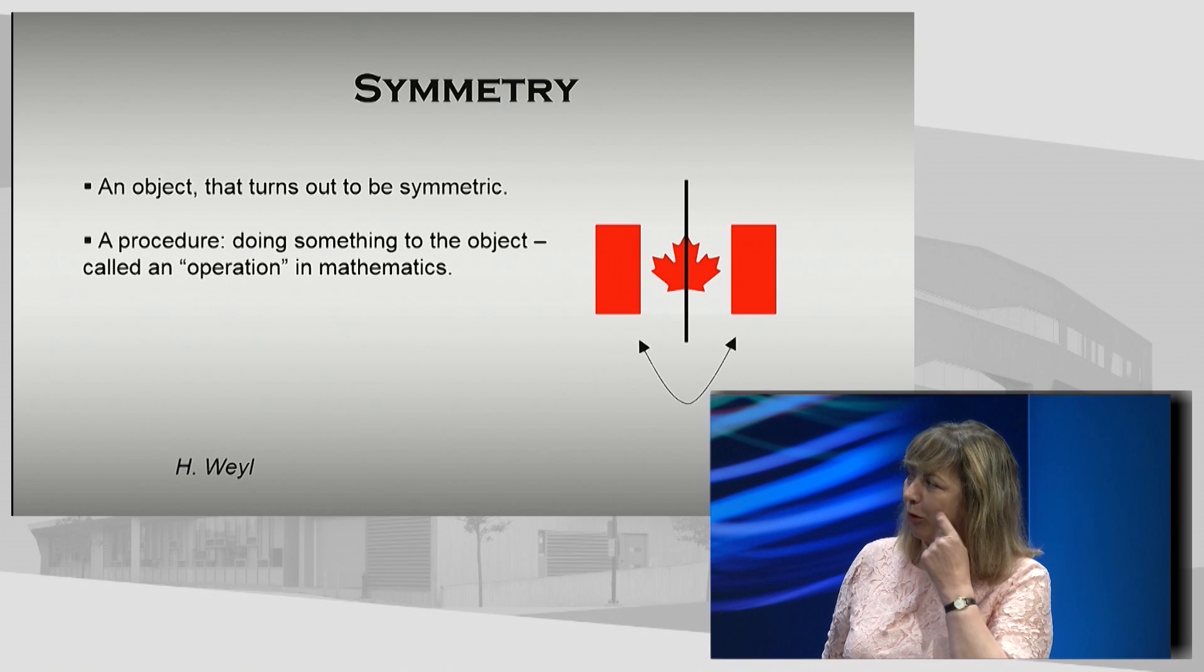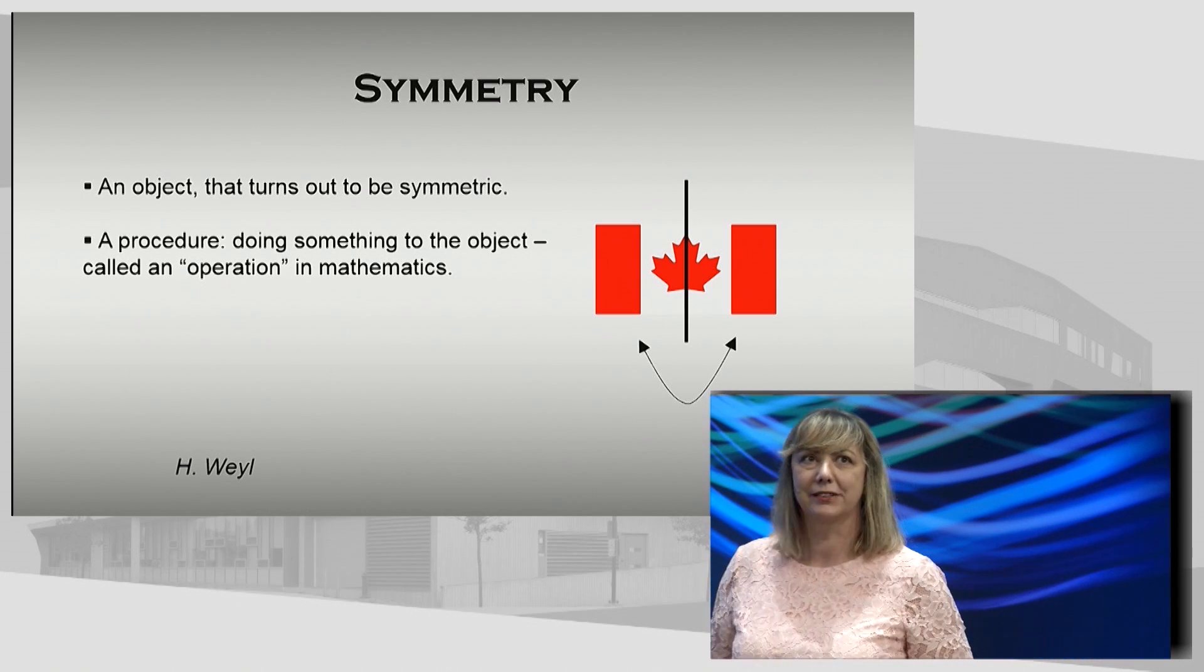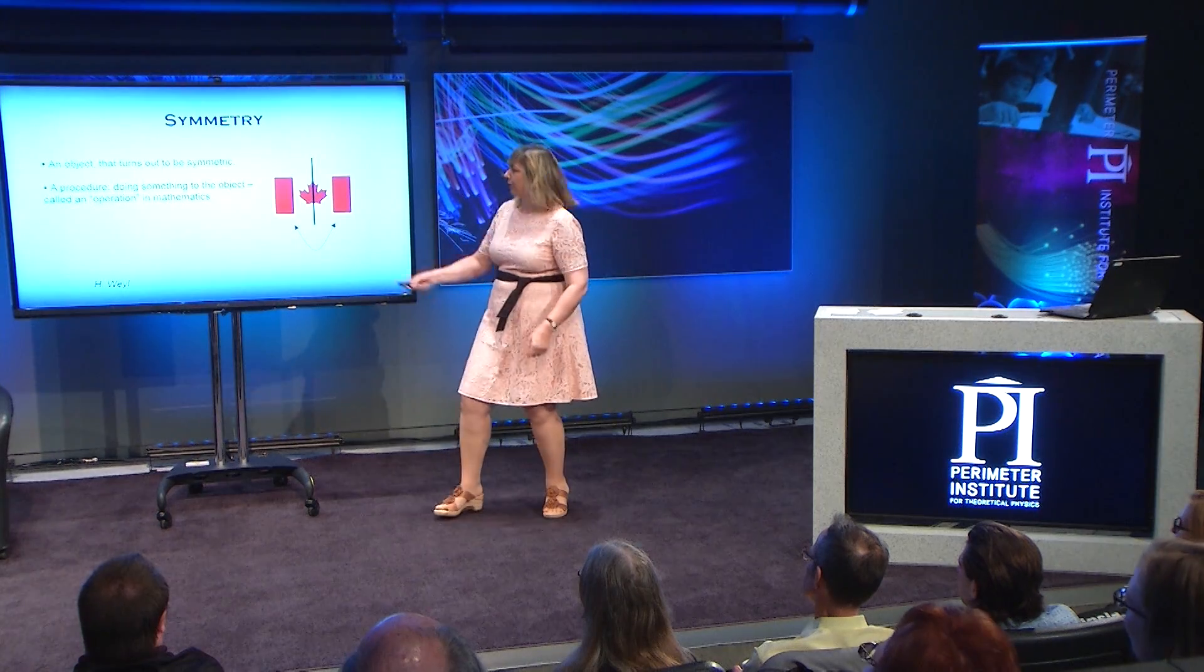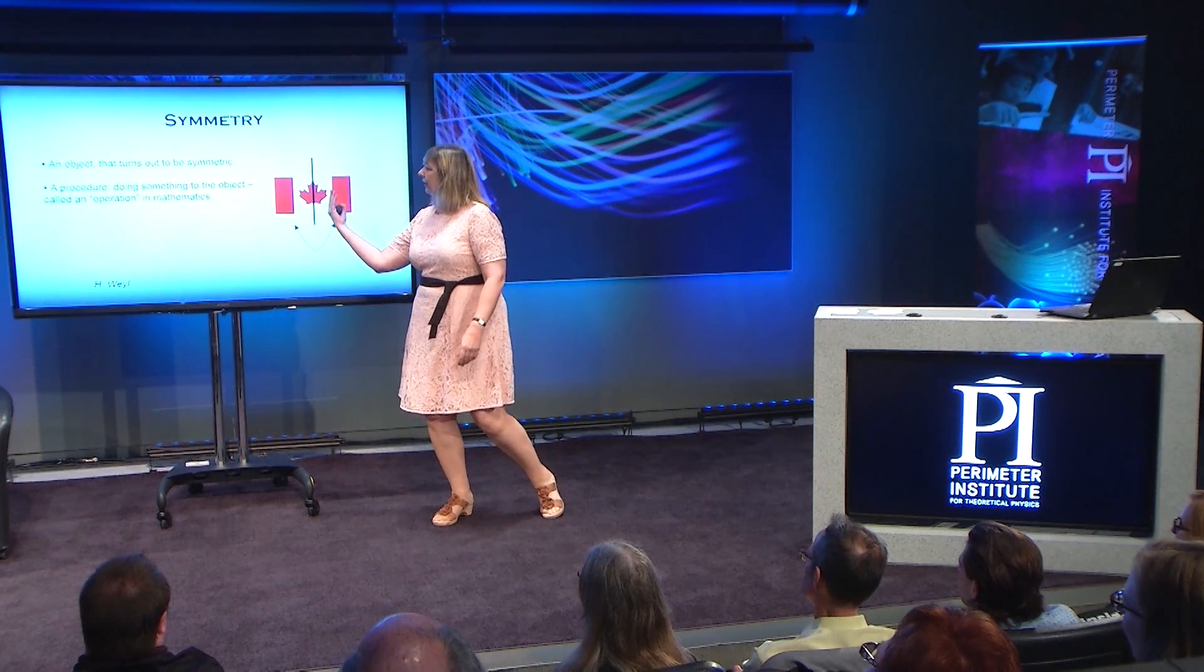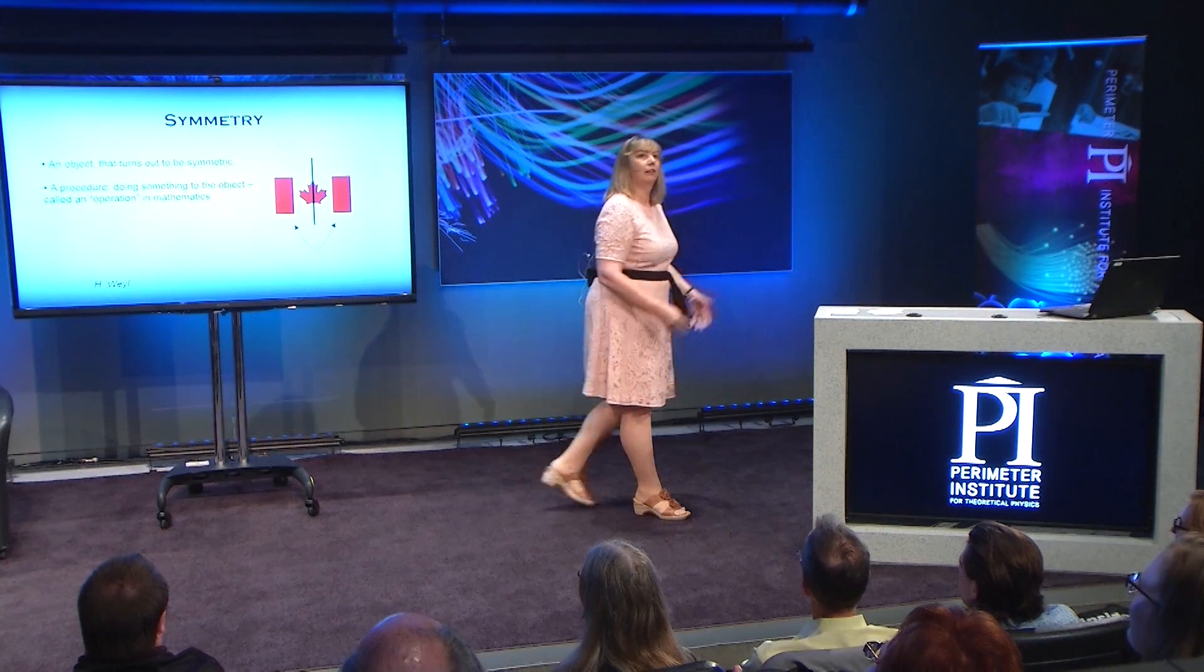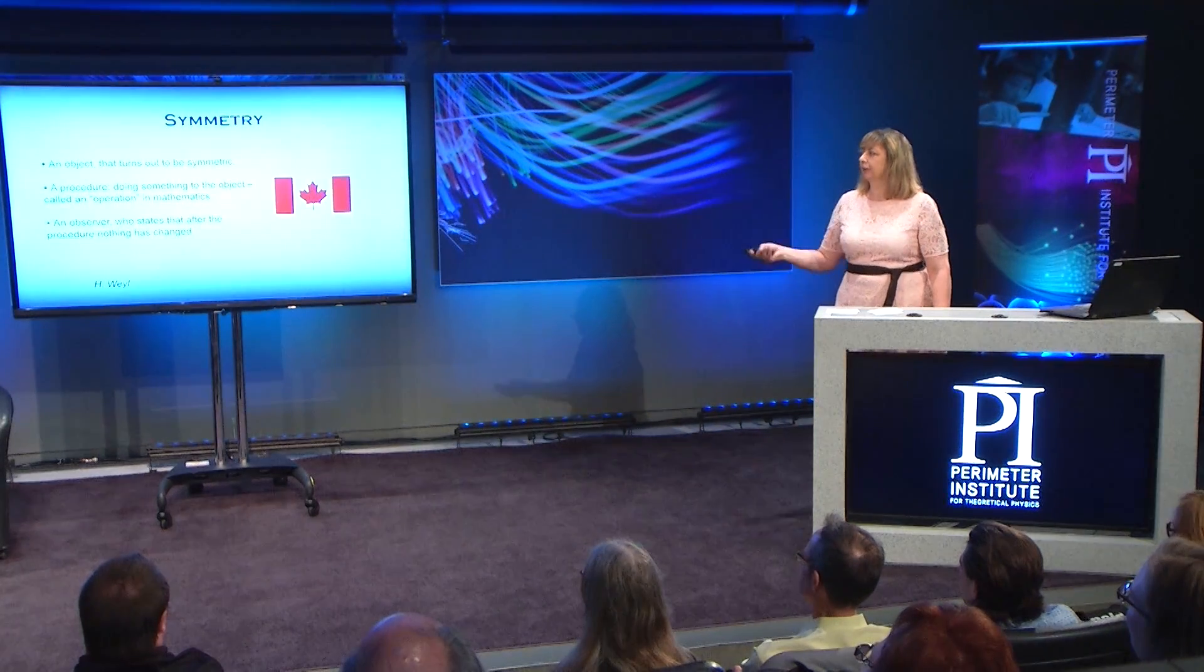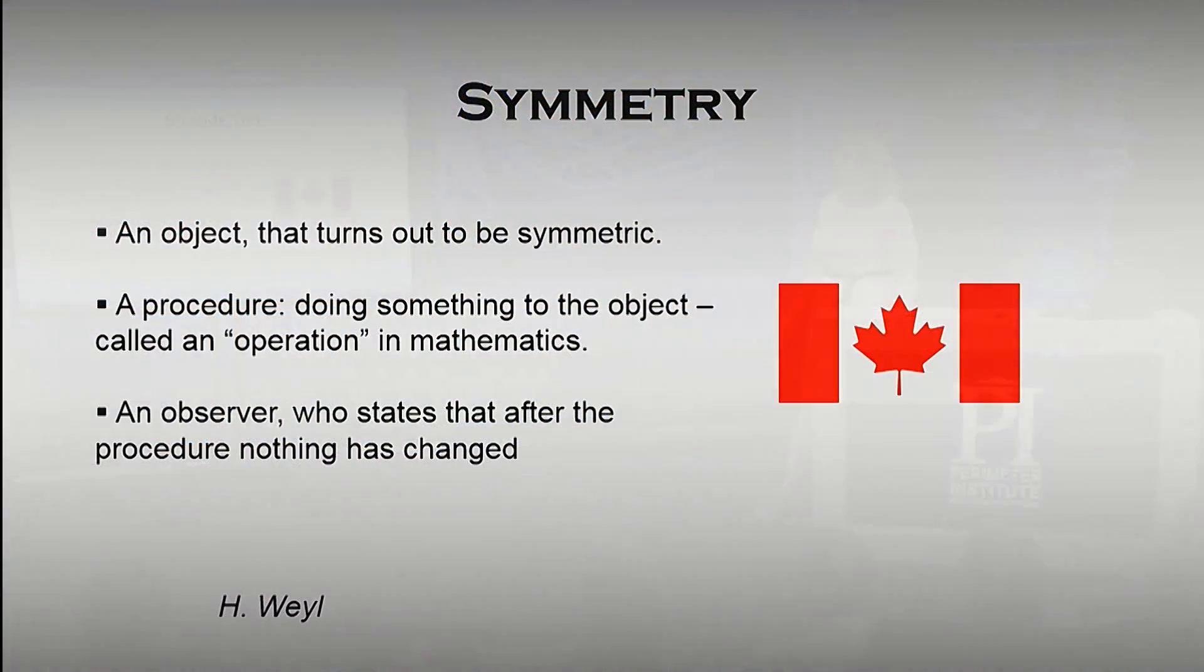Secondly, you need an operational procedure. We call it an operation in mathematics. In this case, it's reflection. If you put a vertical line and reflect the flag around that, that's your operation. Reflection. And finally, we, the observers, decide that after this reflection, nothing has changed. And I'm not going to get into details about stitching around the side of the flag or stuff like that. We're being impressionistic here. So that is what a symmetry is.